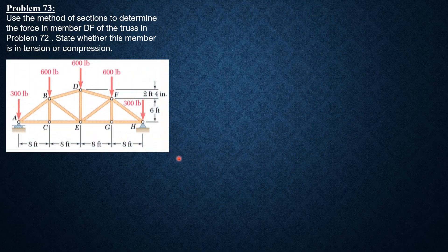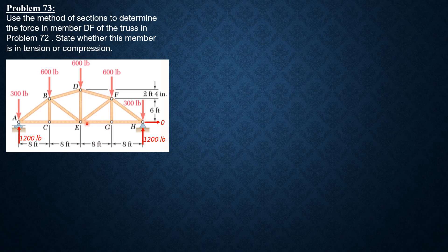Here is problem 72. By symmetry, the vertical reactions at A and H are 1200 pounds each, and the horizontal reaction at H is zero. Since we have to consider the method of sections, we section this panel here so that we can determine the force in member DF.